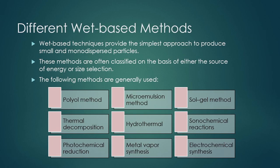The different wet-based methods for synthesis of nanoparticles listed in the slides are: polyol method, microemulsion method, sol-gel method, thermal decomposition, hydrothermal, sonochemical reactions, electrochemical synthesis, photochemical synthesis, and metal vapour synthesis. These wet-based techniques provide the simplest approach to produce small nanodispersed particles, and these methods are often classified on the basis of either the source of energy or size selection.